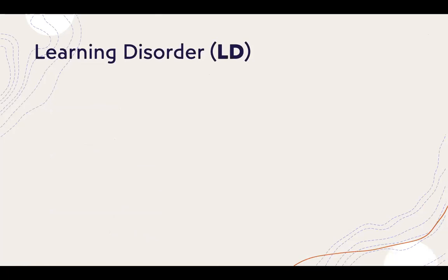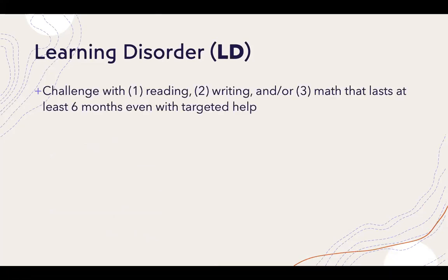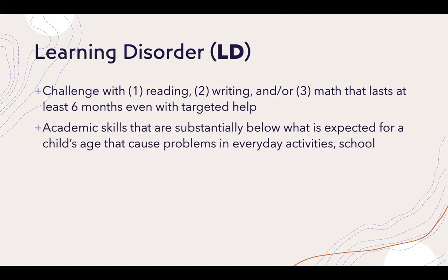Getting into the idea of a learning disorder — often referred to as LD. A learning disorder is challenged with reading, writing, and/or math that lasts at least six months, even with targeted help. In order for it to be a disorder, it needs to be something that's been taught. We wouldn't expect a child who hasn't had the opportunity to practice and be taught how to write to have a writing disorder.